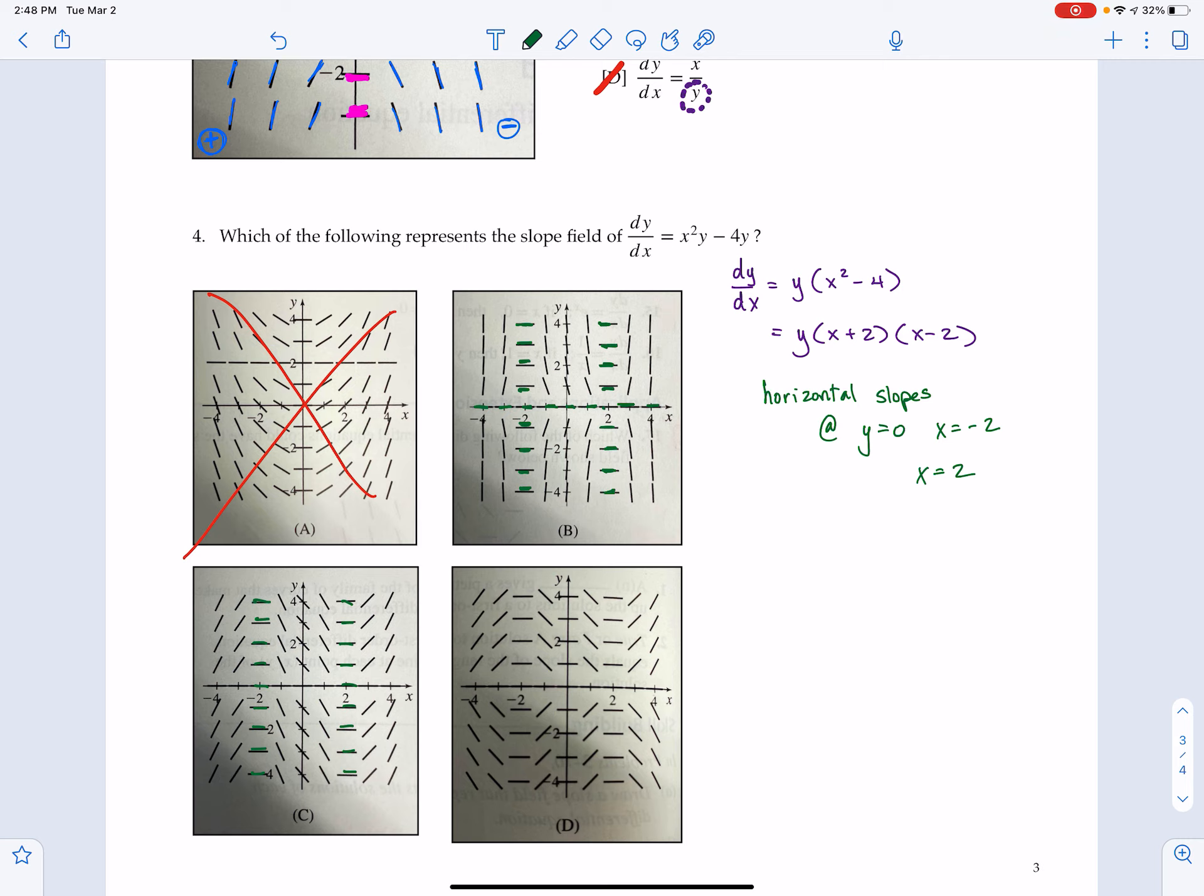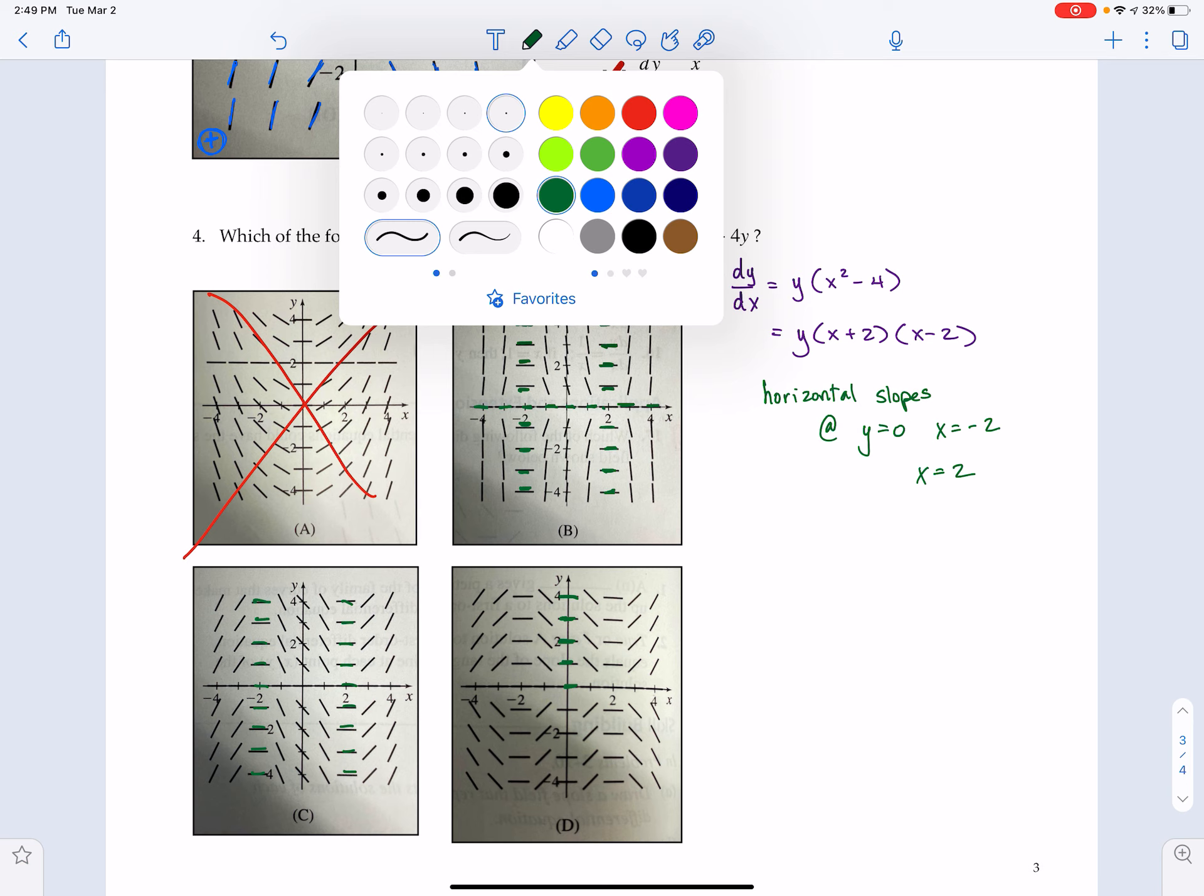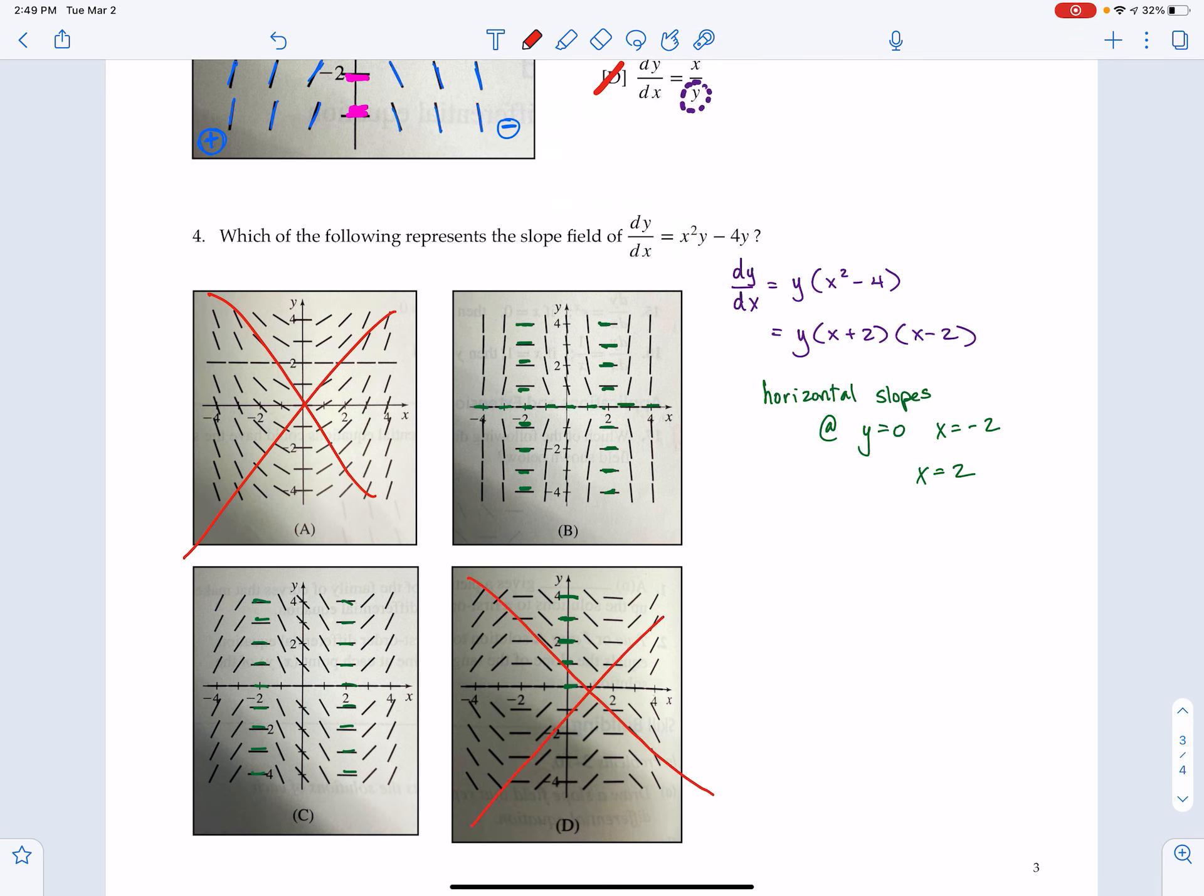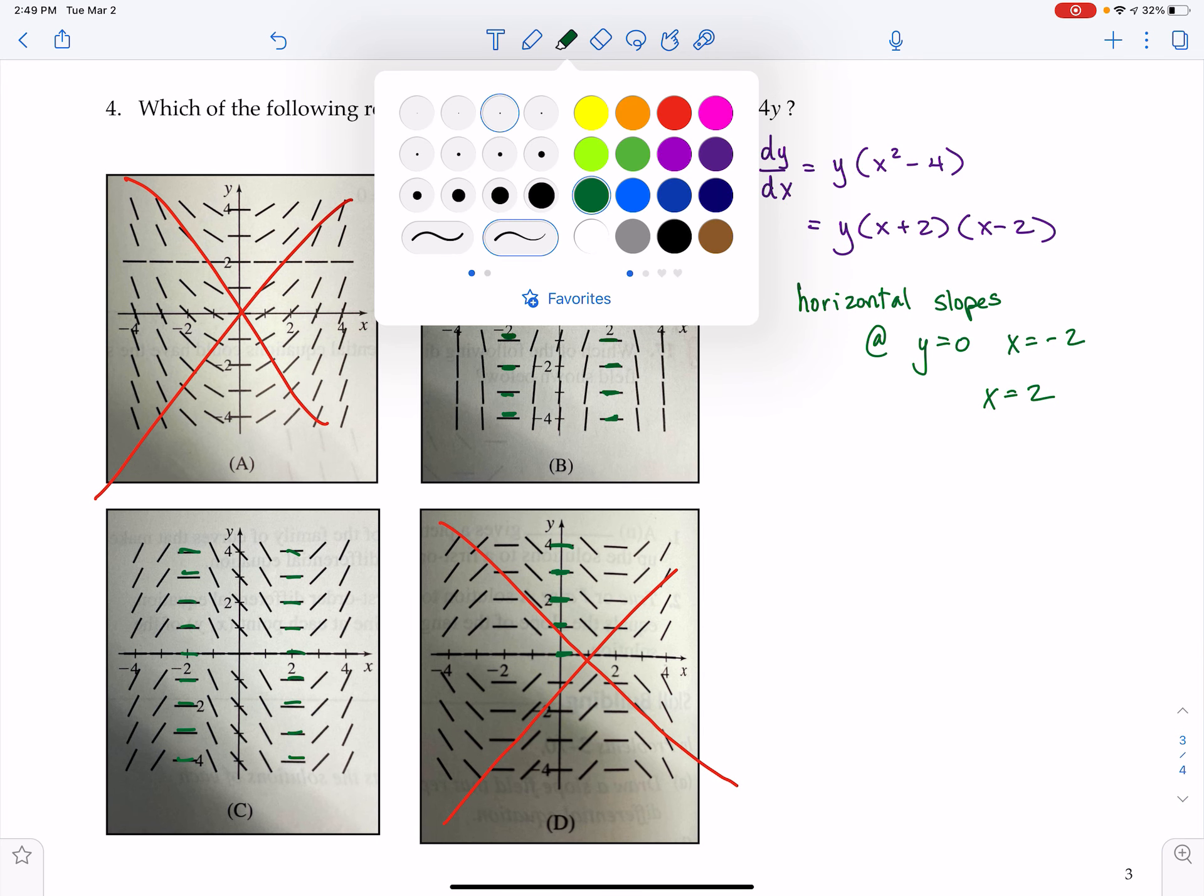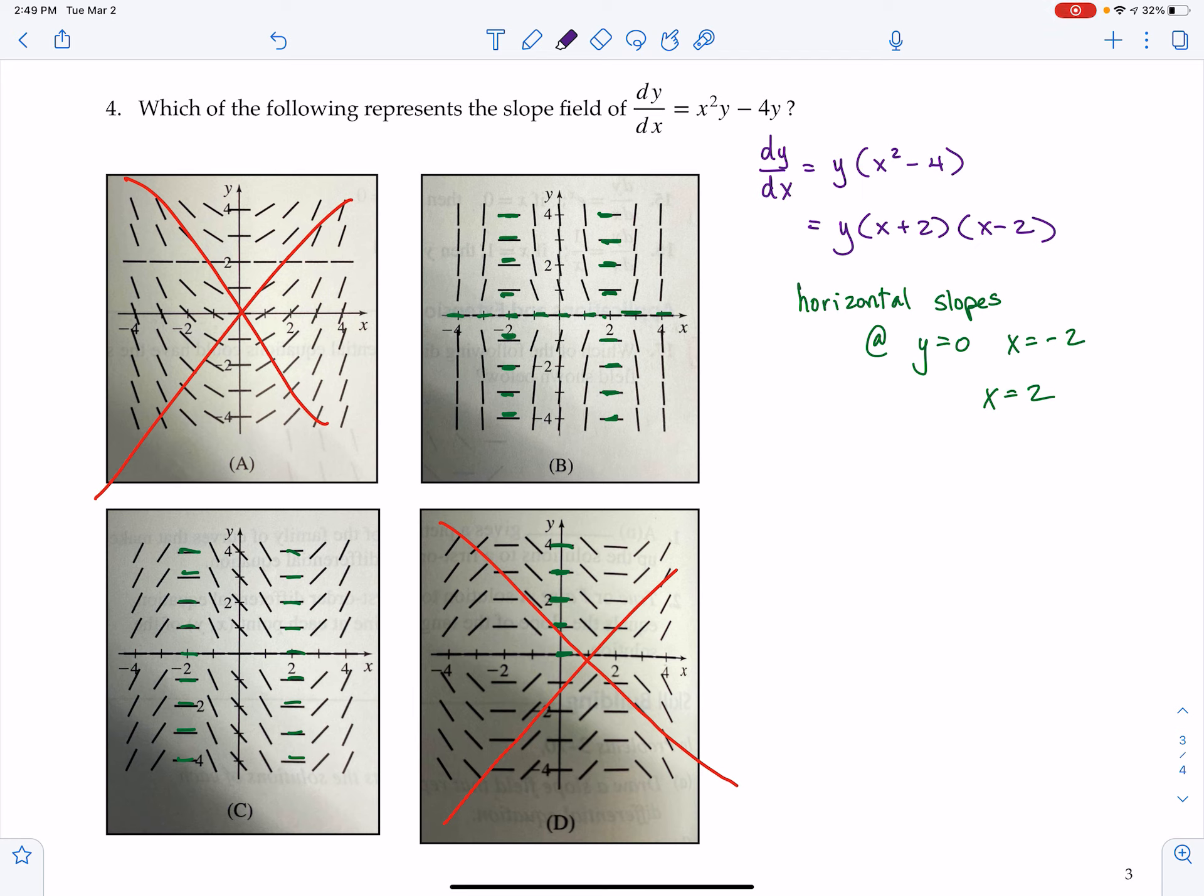We could plug in values. Actually, I'm looking at letter D now, and I see that they have included zero slopes at x equals zero, which we know is not something we're interested in. So we can cross out letter D. So now we're stuck between B and C. We can look at a point where the slopes are different. I'm looking in letter B at zero comma one, or zero comma negative one, I have a positive slope. And in letter C, at zero comma negative one, I have a negative slope.